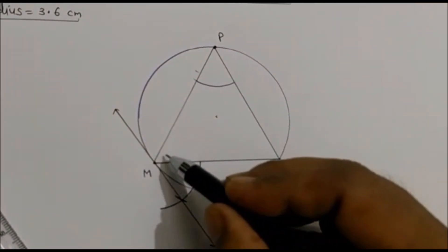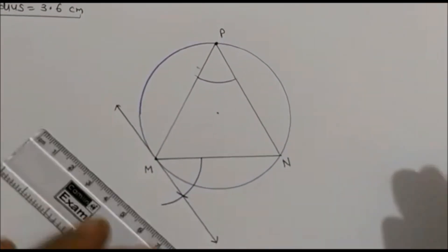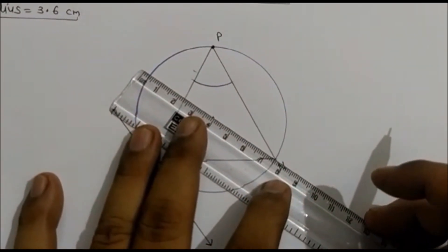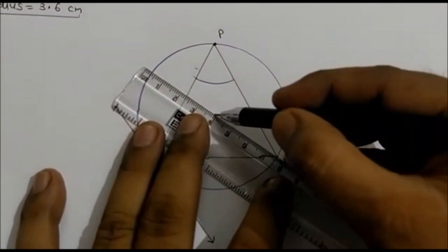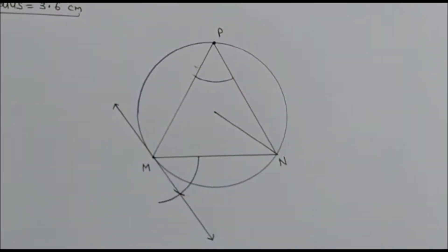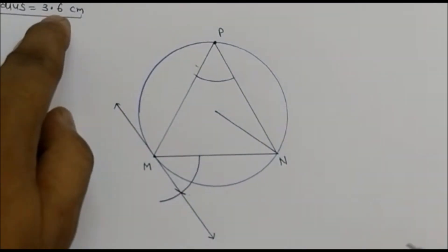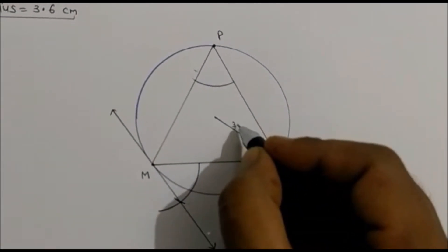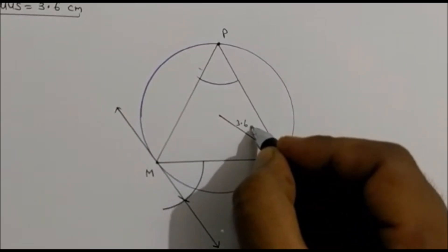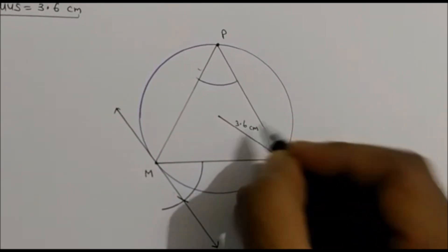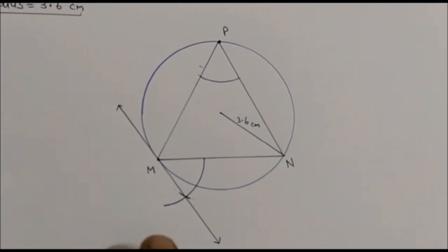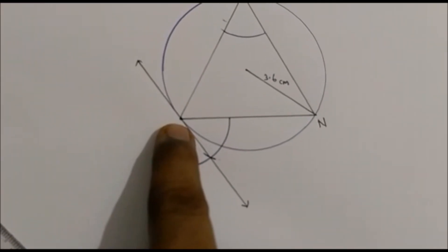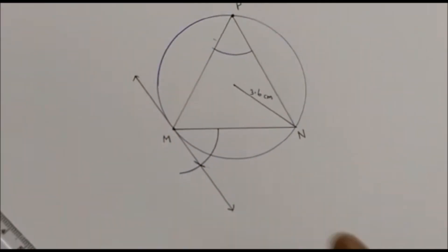But see, we have not used the radius — we have not used the radius. We can show the radius afterwards. The radius was 3.6, so we can write here it is 3.6 cm. So this is the tangent to the circle at point M. You can have a look at it.